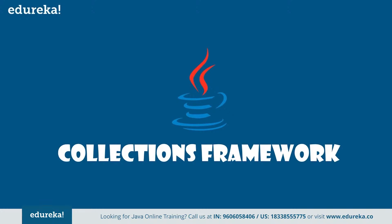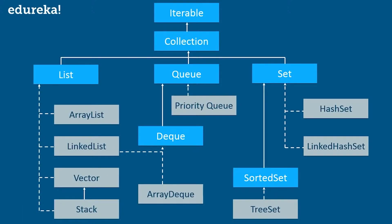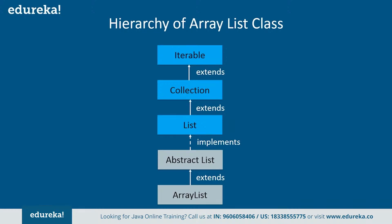A Java collections framework provides an architecture to store and manipulate a group of objects, and it includes interfaces, classes, and algorithms. In this figure, blue boxes refer to the different interfaces and the gray rectangles define classes. List is an interface, and ArrayList, LinkedList, and Vector are classes that implement the List interface. Similarly, Deque is also an interface that extends and inherits the Queue interface. ArrayList uses a dynamic array for storing elements, inherits AbstractList class, and implements the List interface. The List interface extends Collection and Iterable interfaces in hierarchical order.